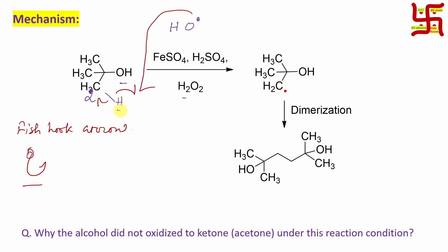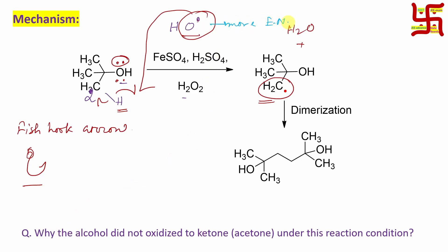One hydrogen is abstracted from t-butanol, producing water (a stable molecule) along with a carbon radical. You may have one confusion: why doesn't OH• abstract an electron from the oxygen of the tertiary alcohol? Because if an oxygen radical abstracts from another oxygen, you get one oxygen radical from another — no significant stabilization. However, going from an oxygen radical to a carbon radical is actually a positive outcome, because oxygen is more electronegative than carbon, so electron deficiency is more painful for oxygen. Therefore, from oxygen radical to carbon radical, slight additional stability is achieved.